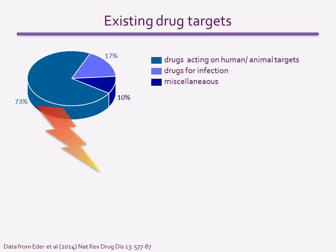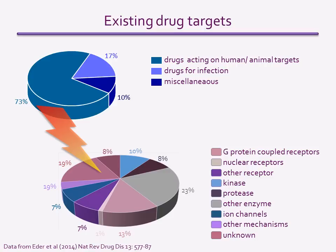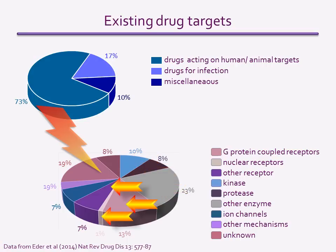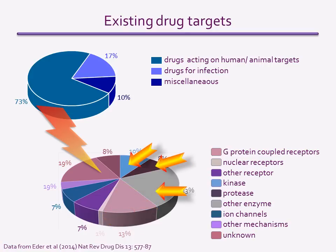Of the human drug targets, they break down as shown in this pie chart. By far, the majority of targets are G-protein-coupled receptors or enzymes. The relative numbers of these have varied over the years. At one time, G-protein-coupled receptors and other types of receptor represented the main drug target, but in recent years they have been overtaken by enzymes as the most common drug target. The main enzymes targeted are kinases, which phosphorylate other proteins, and proteases, which break down other proteins.